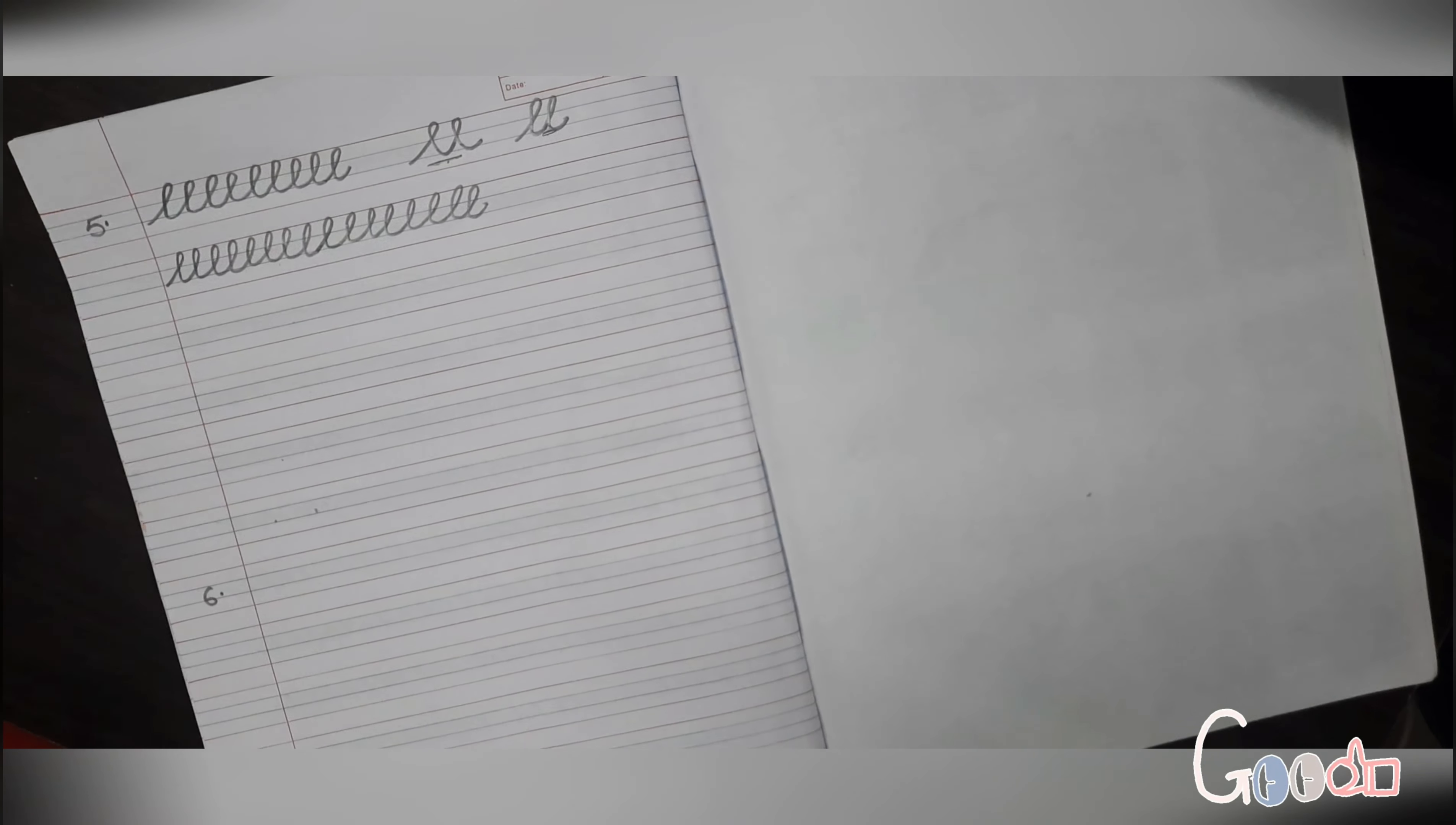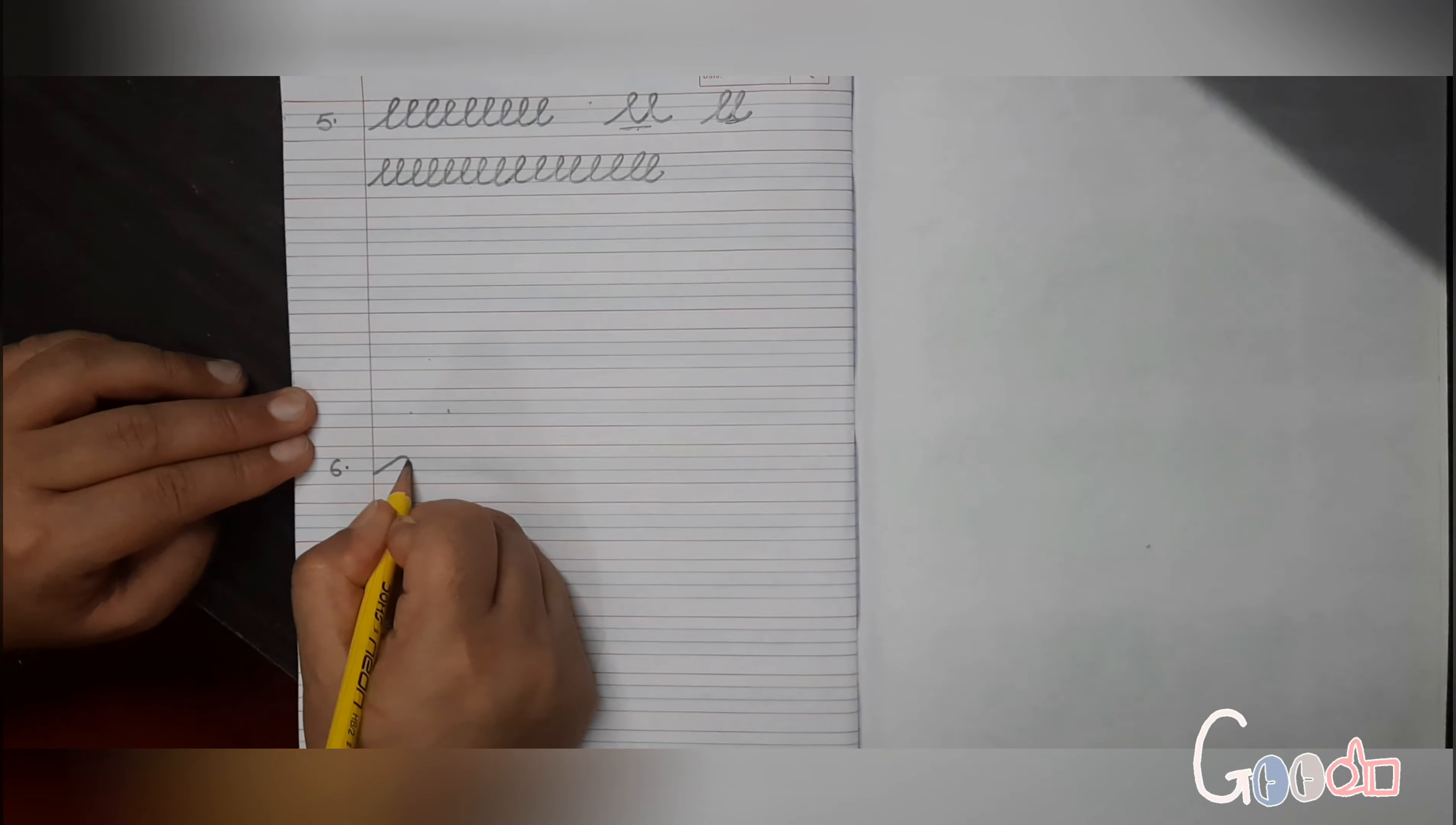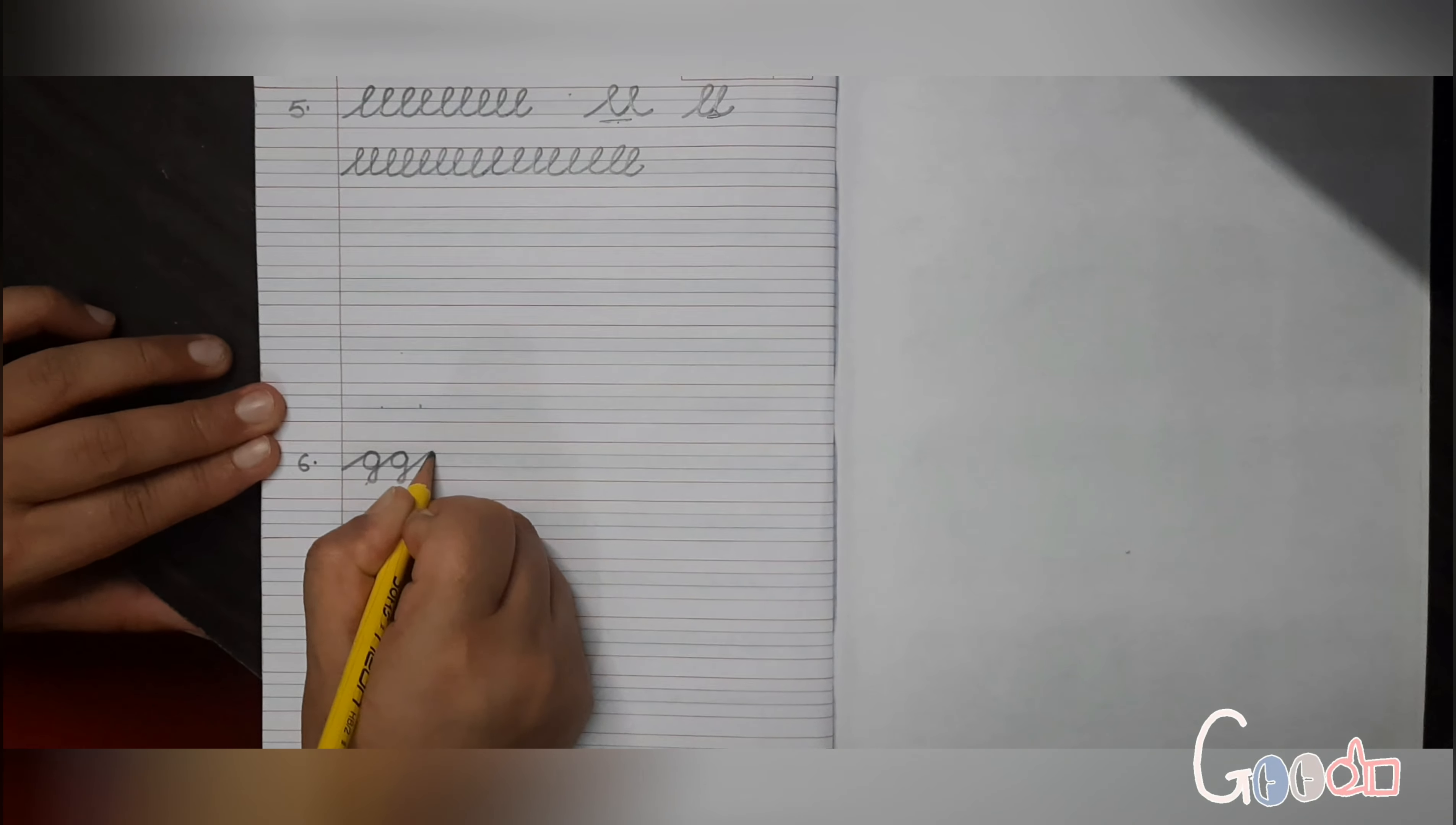Coming on to the sixth stroke, which we'll take to the bottom red line. This was towards the top red line, now we are going to do the stroke towards the bottom red line. Here we are going to take G: curve up, down, turn, C this way.